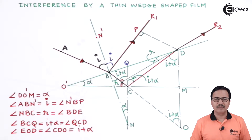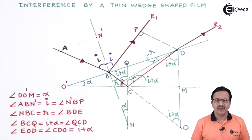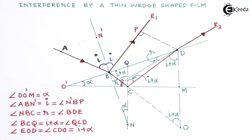In this diagram we are going to see what exactly is a wedge and what are the different reflecting waves which are ultimately going to give us the interference pattern. Remember, this is an air wedge — the medium between the two plates inclined at angle alpha is air.